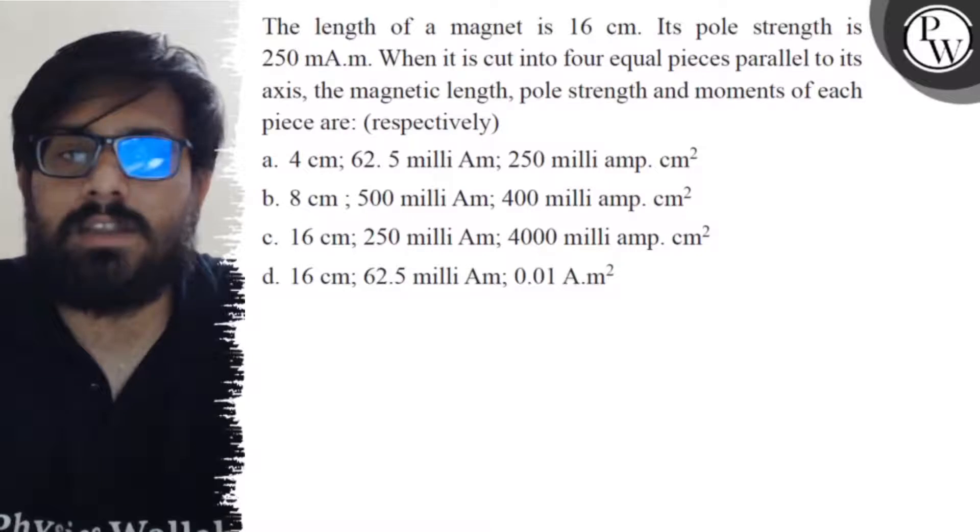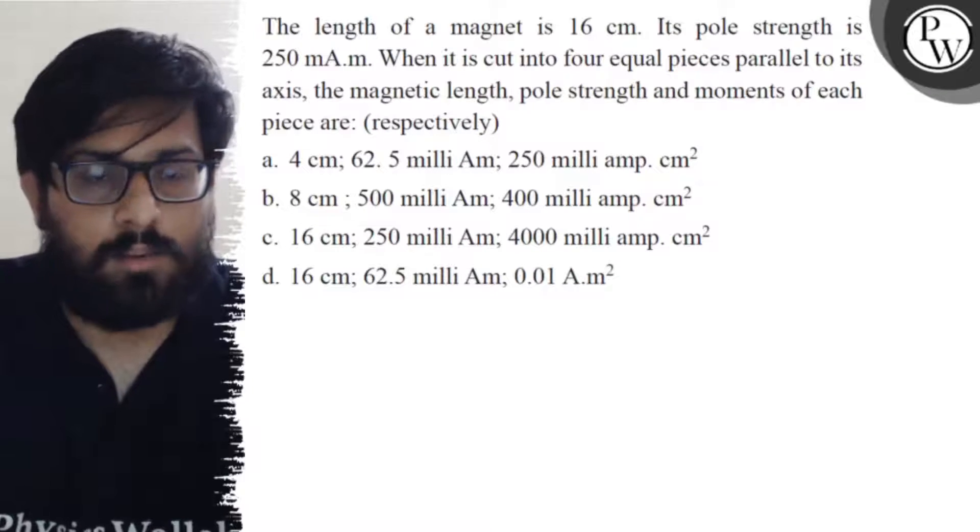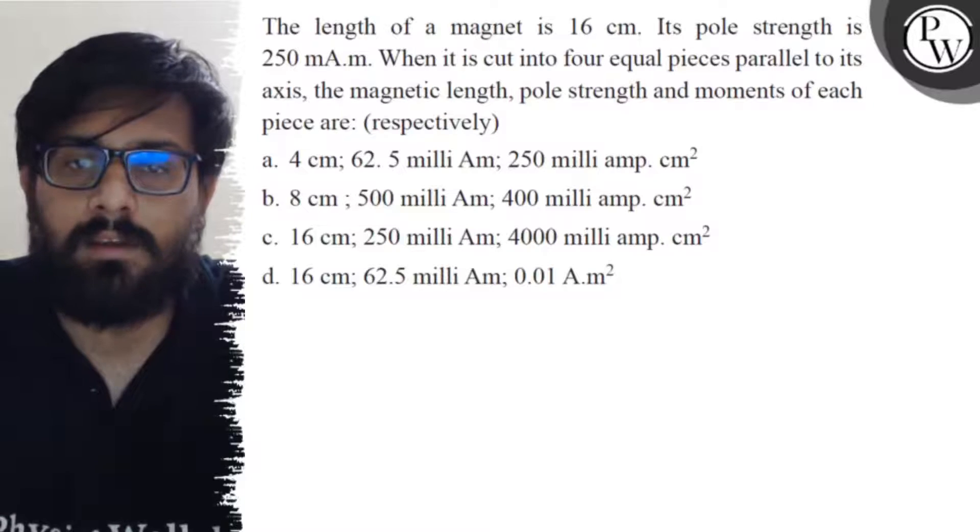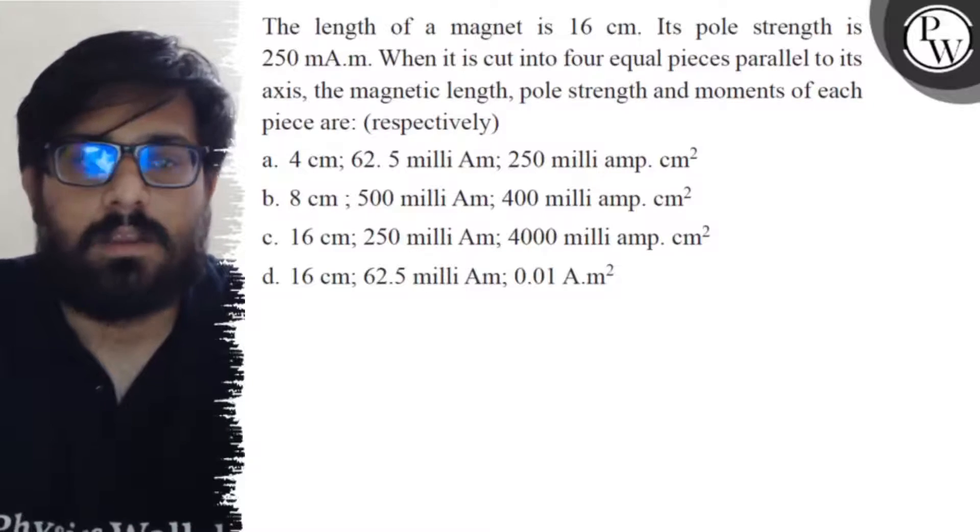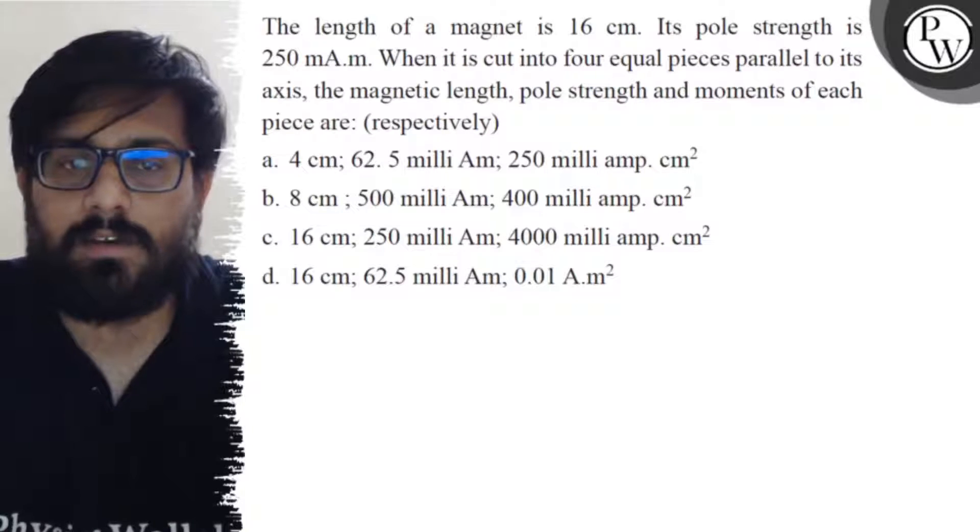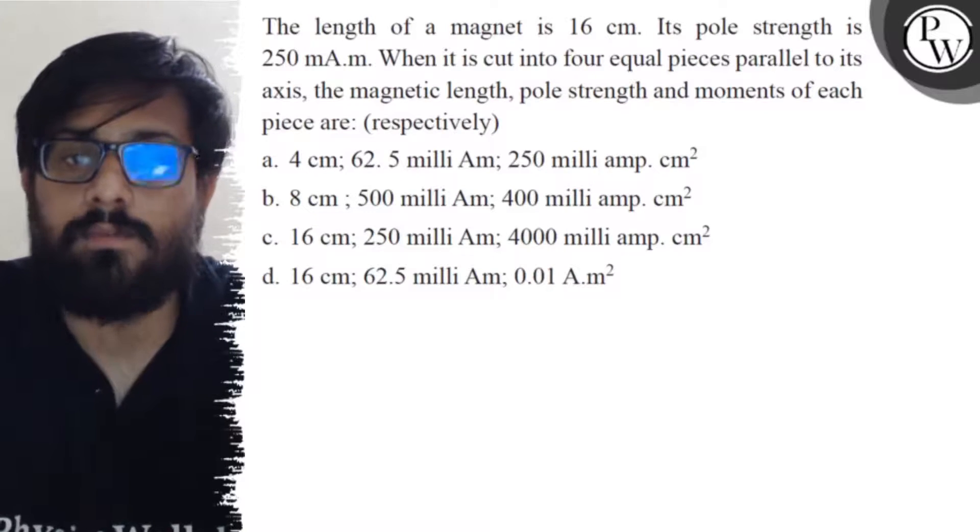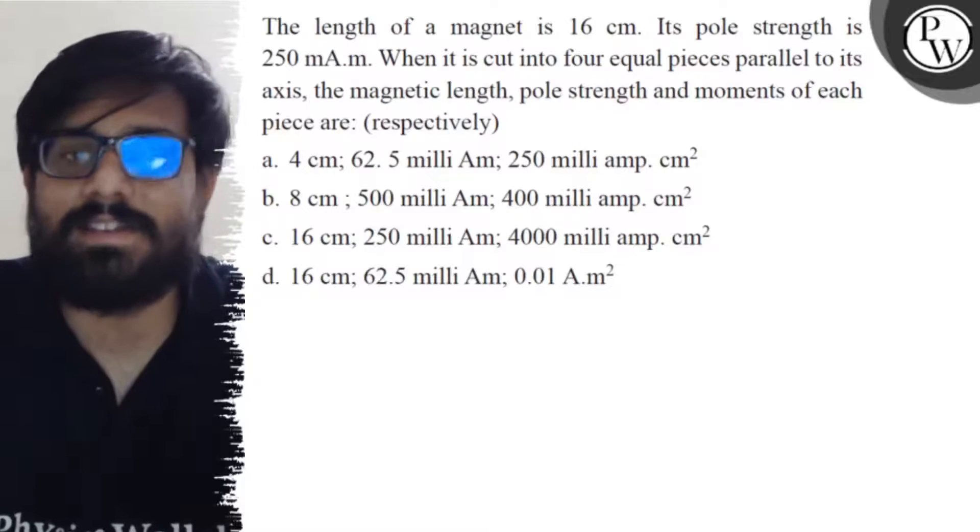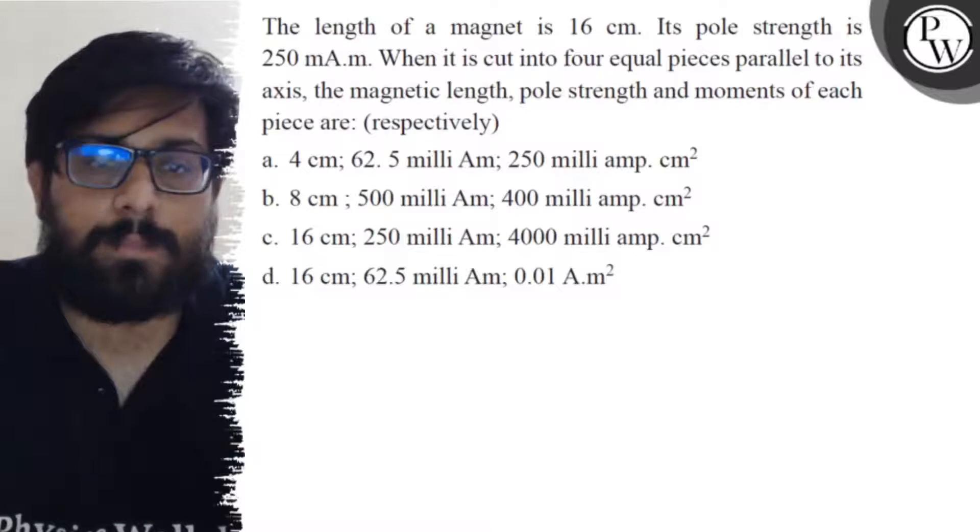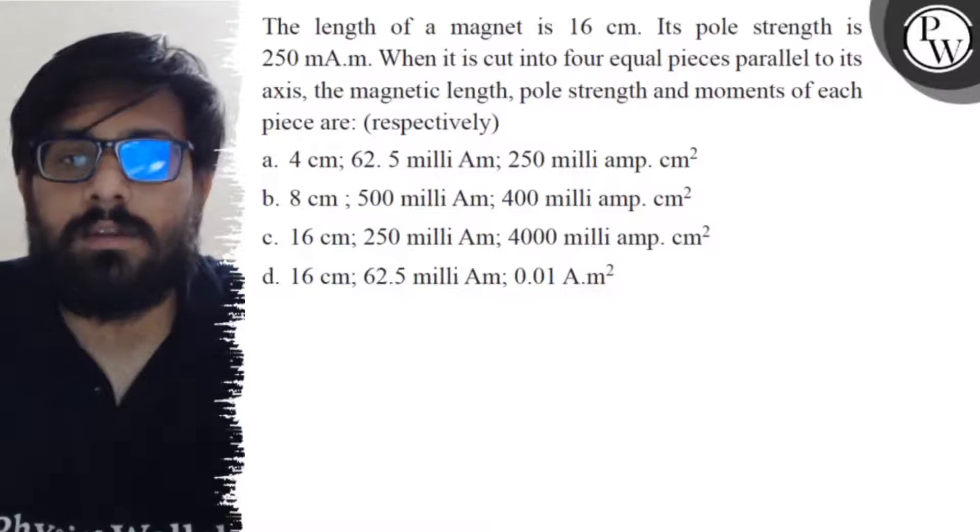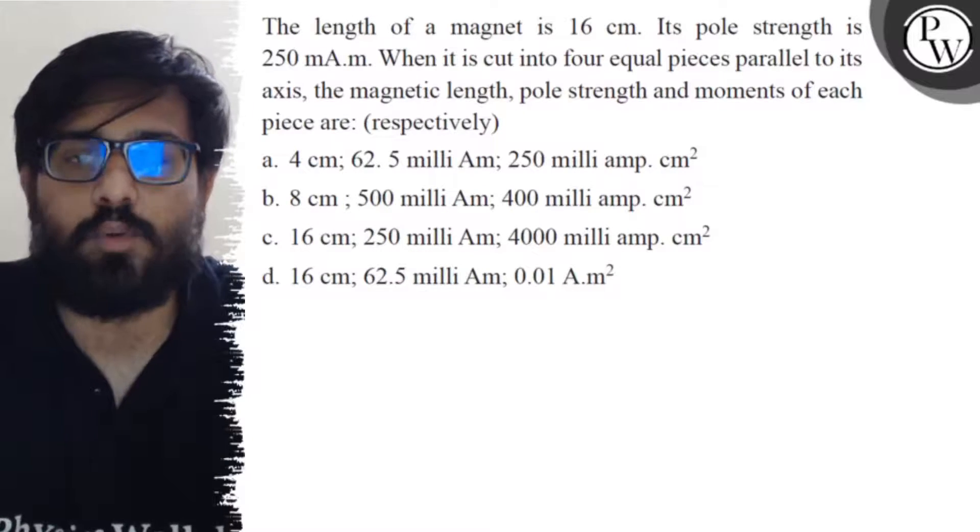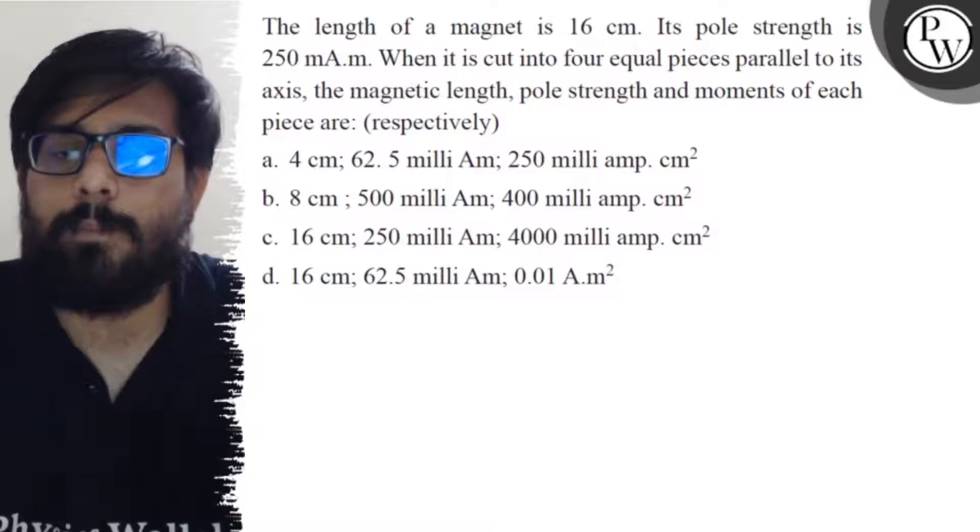and moments of each piece are: Option A: 4 cm, 62.5 mA·m, 250 mA·cm². Option B: 8 cm, 500 mA·m, 400 mA·cm². Option C: 16 cm, 250 mA·m, 4000 mA·cm². Option D: 16 cm, 62.5 mA·m,